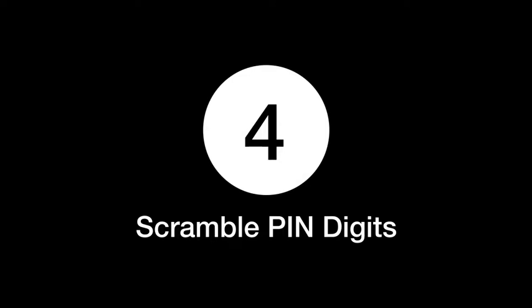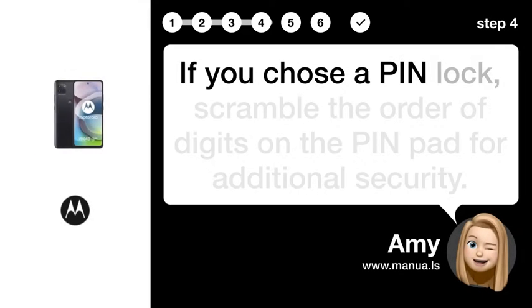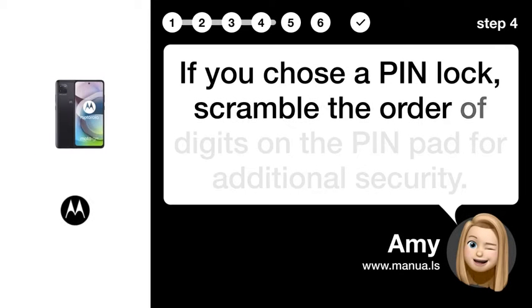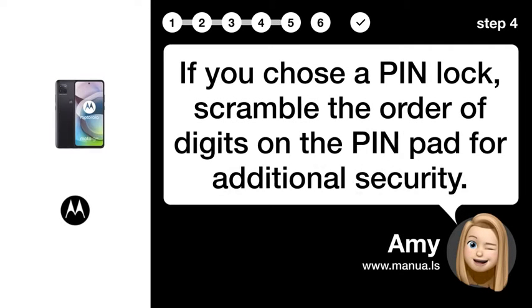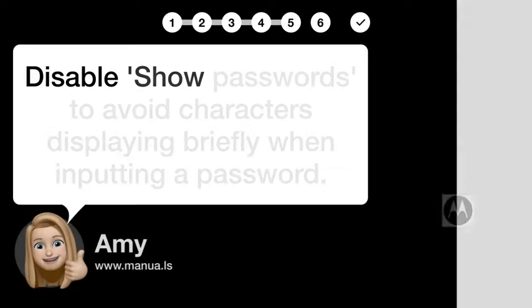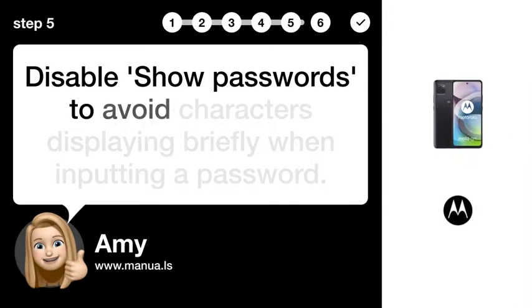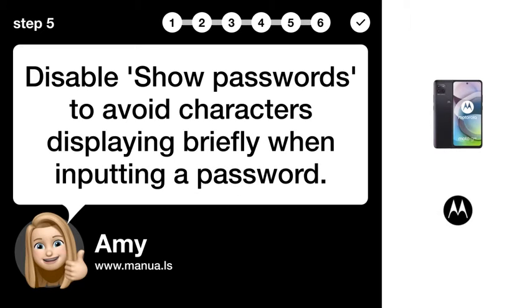Step 4: Scramble PIN Digits. If you chose a PIN lock, scramble the order of digits on the PIN pad for additional security. Step 5: Disable Show Passwords. Disable Show Passwords to avoid characters displaying briefly when inputting a password.